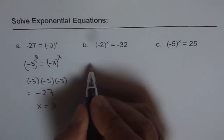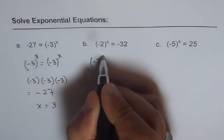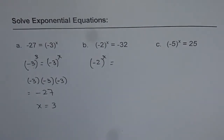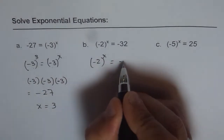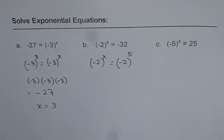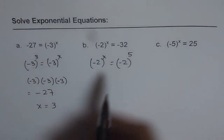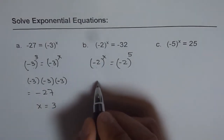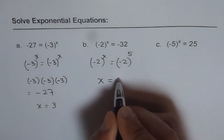Here is my solution. On the left side we have minus 2 to the power of x, and on the right side we have minus 32. How can we write minus 32 as minus 2 to the power of something? That something is 5. So we write this as minus 2 to the power of 5, since minus 2 multiplied five times equals minus 32. We now have an equation with the same base, minus 2, and therefore the exponents must be exactly the same. The solution is x equals 5.